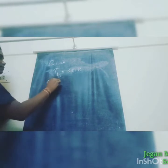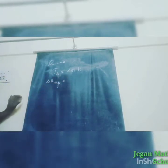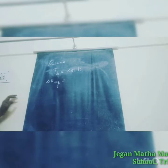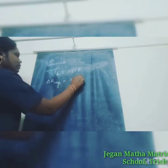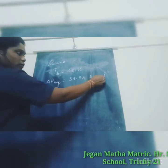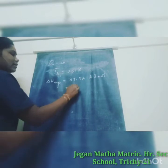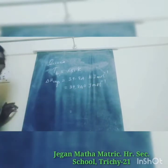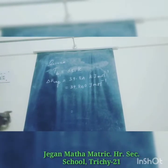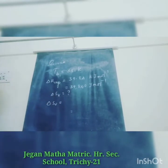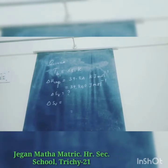ΔH_vapor is 39.84 kJ per mole, which converted to joule per mole by multiplying by 1000 gives 39,840 joule per mole. We want ΔS_v. The formula for ΔS_v is ΔH_vapor divided by Tb.